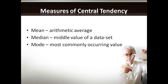Measures of central tendency are essentially measures to try and describe where the middle of the data is. There are three ways to do this: mean, which is the arithmetic average; median, which is the middle of a data set; and mode, which is the most commonly occurring value. All of these attempt to describe the middle of a data set in different ways.